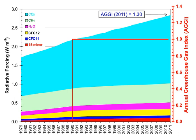The average residence time of a water molecule in the atmosphere is only about nine days, compared to years or centuries for other greenhouse gases such as CH4 and CO2. Thus, water vapor responds to and amplifies effects of the other greenhouse gases. The Clausius-Clapeyron relation establishes that more water vapor will be present per unit volume at elevated temperatures.